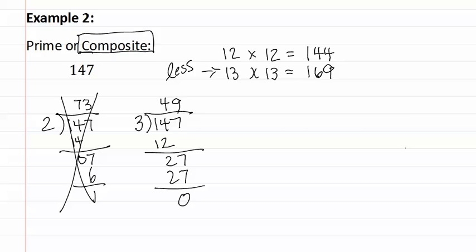To sum up, a prime number is a number that is divisible by one and itself, and a composite number is divisible by other numbers evenly, such as prime or composite numbers. Remember, it is easiest if you know your times tables and find the squares that are directly above and below the number in question. You then try all prime numbers that are less than that number. If one divides in evenly, meaning it has no remainder, that means it is a composite number.